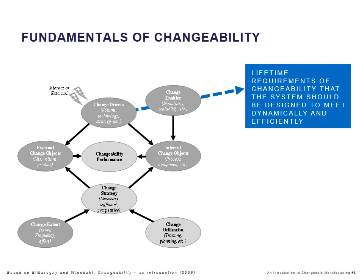The reason why we want to be able to design and develop changeable manufacturing systems is because we want to respond to change drivers that can be external or internally imposed. These change drivers could be change of demanded volume, change in required technologies, a new strategy of the company, different changes of variants, or rapid introduction of new products — basically all types of change imposed on the manufacturing system that we need to respond to.